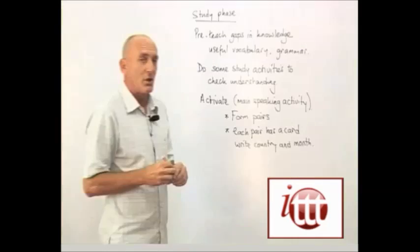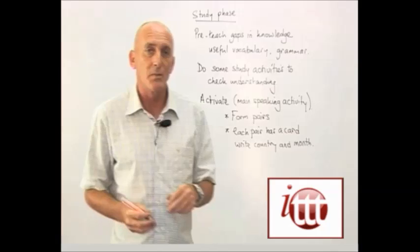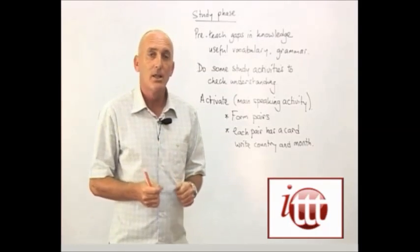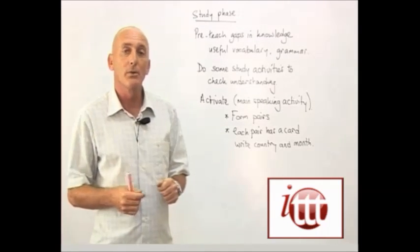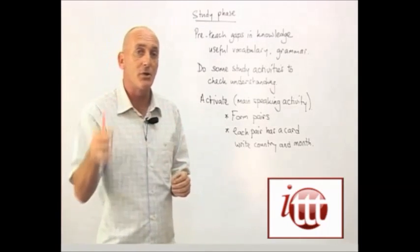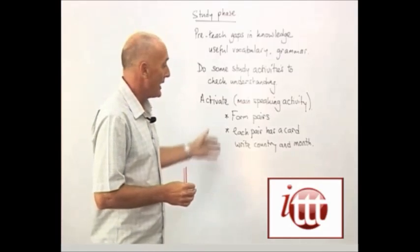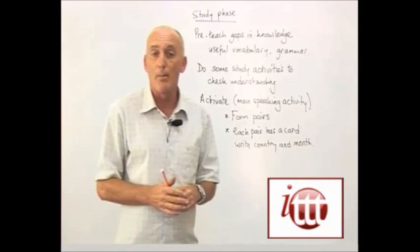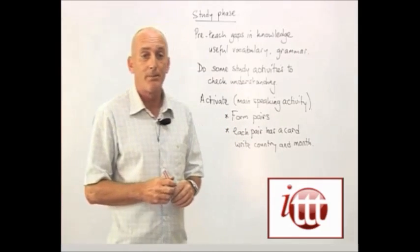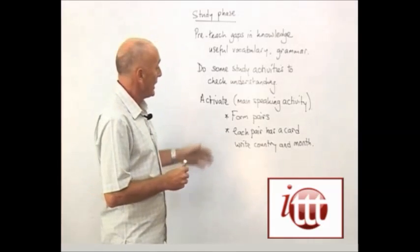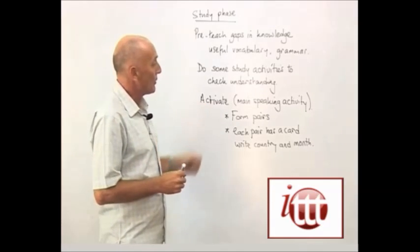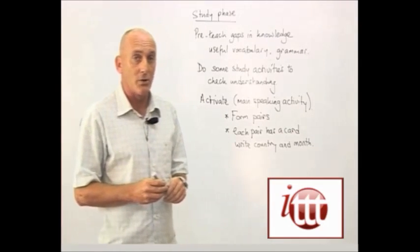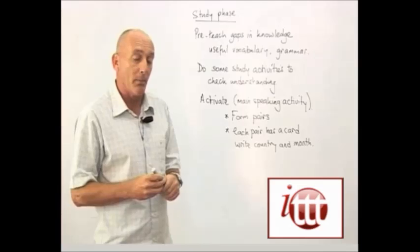Each pair is going to be given a card, and onto that card they're going to write a country and a month. What the teacher can then do, just to add a little bit of spice to it, is to collect all of the cards in, shuffle them around, and then redistribute them to the pairs so that they get a card that doesn't have their country or their month on it. What they're then going to do is to be asked to create a weather forecast for that country in that particular month.